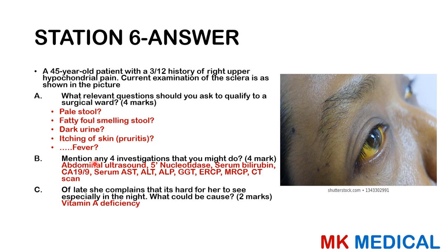Investigations include abdominal ultrasound, 5'-nucleotidase, serum bilirubin, CA 19-9 (especially for tumors of the head of the pancreas), serum AST, ALT, alkaline phosphatase, gamma-glutamyl transferase, ERCP, MRCP, and CT scan — pick any four. The reason she cannot see well at night is because fat is not emulsified, so fat-soluble vitamins A, D, E, and K are not absorbed. This leads to vitamin A deficiency causing night blindness.